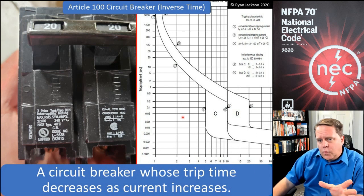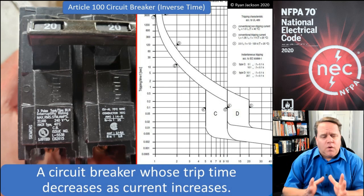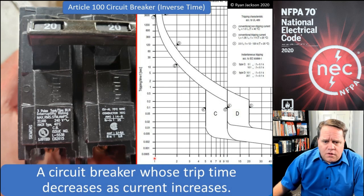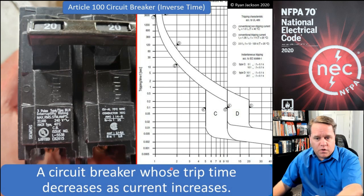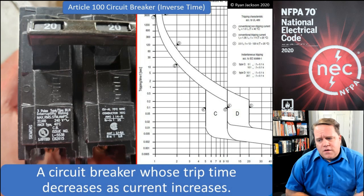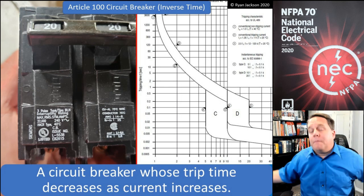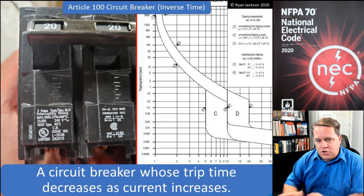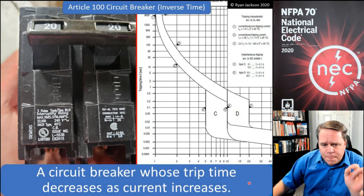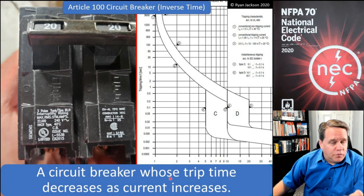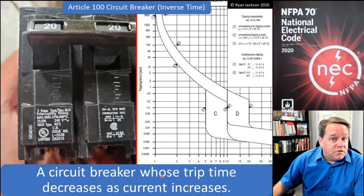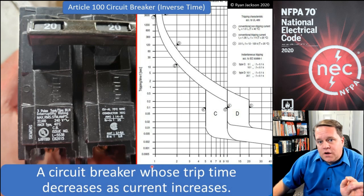When you look at a time-current characteristic curve, it's printed on logarithmic paper, meaning it's not to scale — the distance between 1 and 2 is not the same as between 2 and 3, or 3 and 4. You can see it goes 1, 2, 3, then 10, 15, 20. If we wanted it to scale, we'd need a piece of paper literally a mile long, so we use logarithmic paper. Current on the bottom is shown in multiples of the circuit breaker's handle rating.